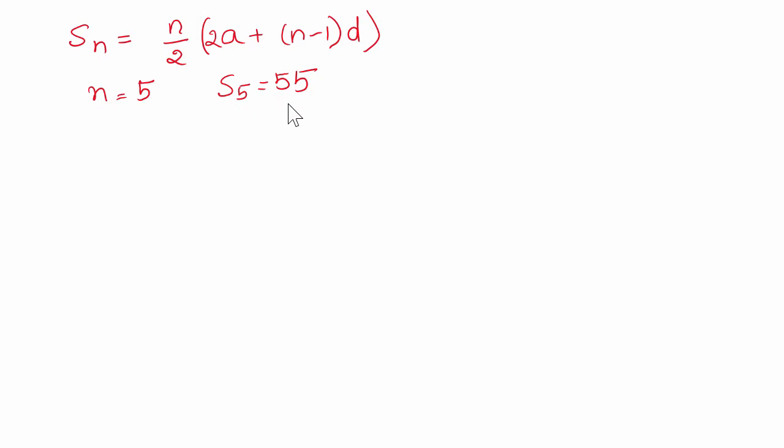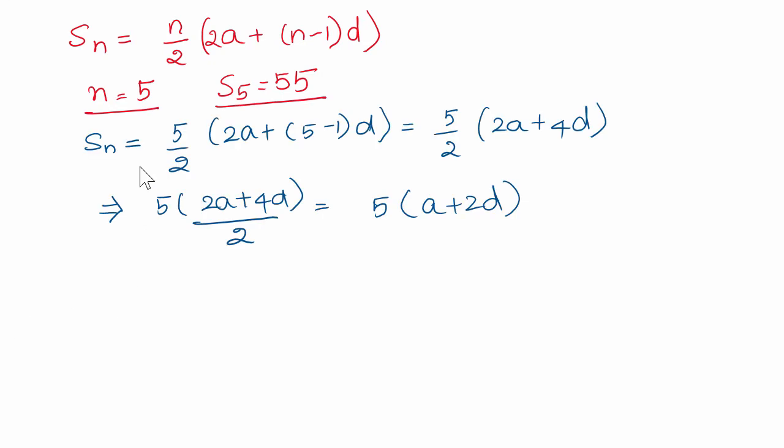Sn equals 5 by 2, 2a, n minus 1 becomes 5 minus 1 because n is 5d. And then simplify, 5 by 2, 2a plus 5 minus 1 becomes 4, 2a plus 4d.